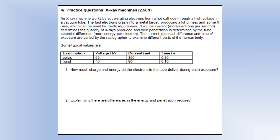An X-ray machine works by accelerating electrons through a high voltage in a vacuum tube, and those electrons crash into a target, producing heat and X-rays. The tube current determines the quantity of X-rays produced, and the penetration of the X-rays is determined by the potential difference. For the pelvis we've got a voltage of 65 kV, whereas for a hand it's 40. We want to know how much charge and how much energy the electrons in the tube deliver during each exposure.